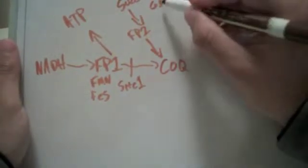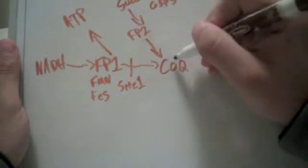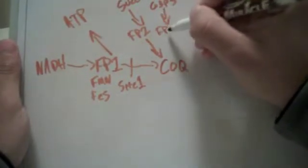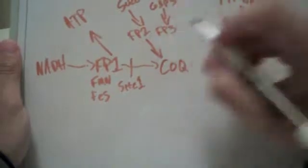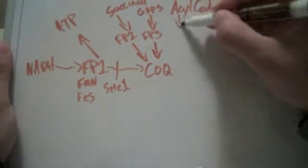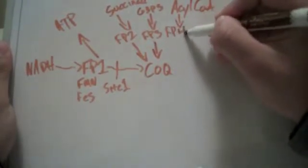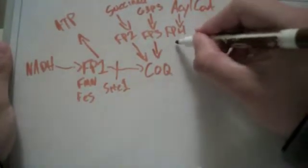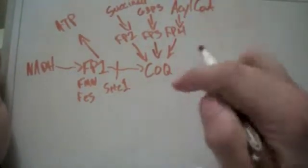Glycerol-3-phosphate shuttle. I have another video on this. You can see the exact mechanism bringing the electrons to CoQ. FP3, which is glycerol-3-phosphate dehydrogenase. And another source of electrons is acyl-CoA, a fatty acid coenzyme. That goes through FP4, which is acyl-CoA dehydrogenase. These biochemists were very creative with their names. Anyways, it makes it easy.